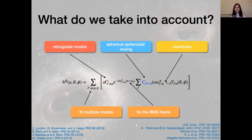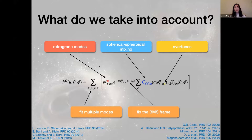Putting everything together: in ring-down, we have to take into account retrograde modes. Each quasi-normal mode frequency has two solutions — a prograde and a retrograde. Usually people look at the prograde solution. The retrograde solution is only important in some systems; in others it has a very small contribution, but either way we take it into account.